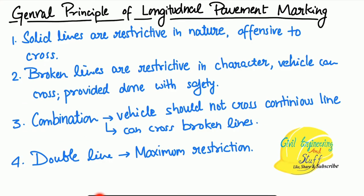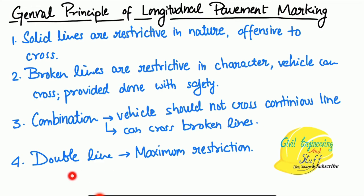There is also a combination of solid lines and broken lines — wherever there is a solid line you are not allowed to cross, while wherever there is a broken line you are allowed to cross. To indicate the severity of restriction, we use double lines. Wherever there are double lines, it is a message that under no condition should you violate them. It marks a very sensitive zone — an accident hotspot — so you must be very careful.